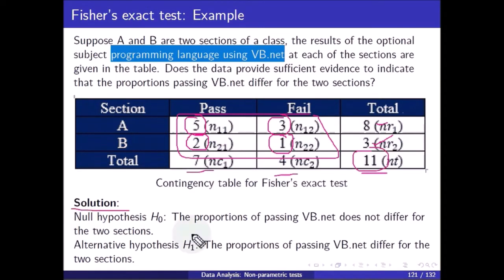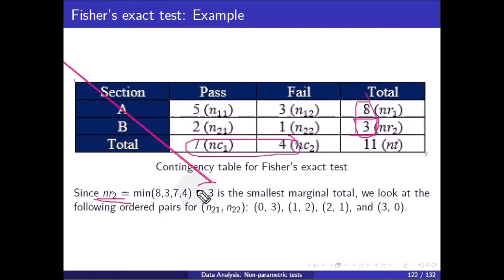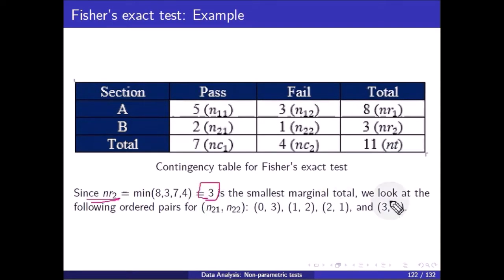Null hypothesis: the proportion passing VB.NET does not differ for the two sections. Alternative hypothesis: the proportion passing VB.NET differs for the two sections. First, identify ns: the minimum of all four marginal totals (8, 3, 7, 4) is 3. So ns equals nr2 equals 3, which is the smallest marginal total.